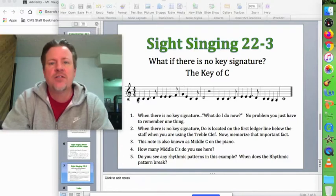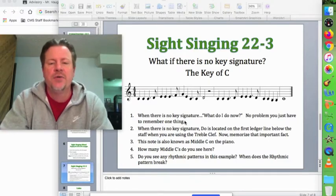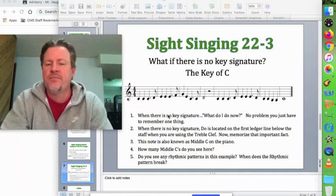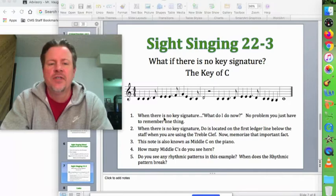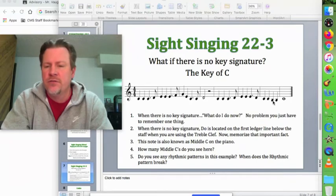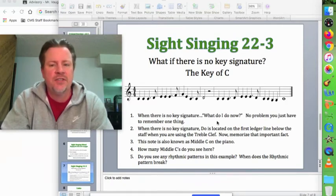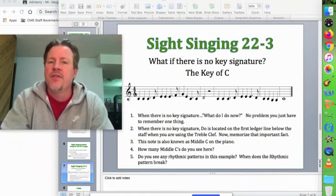The one on the ledger line down here is called middle C. So in this example, the question is how many middle C's do you see? I'm going to give you a second to count it. And let's find out: one, two, three, four, five, six, seven, eight, nine, ten - that one is below the ledger line so that's not it - and eleven. So there's eleven middle C's in this exercise.